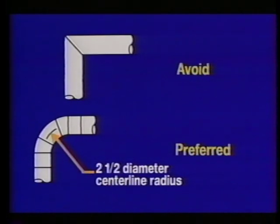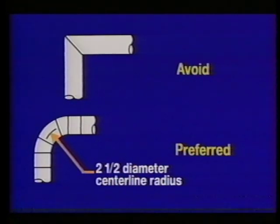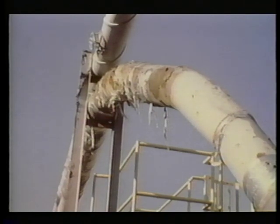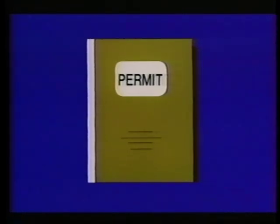Avoid two branches entering directly opposite each other to reduce turbulence loss. Avoid sharp elbows such as a mitered elbow. The magnitude of pressure losses caused by elbows depends on the radius of the elbow curvature compared to the duct diameter. Where space permits, elbows should have a centerline radius of two to two-and-a-half duct diameters. Replace ductwork when it wears out due to erosion and impact damage from airborne particles, and maintain all ductwork in good working order. During design, remember to check with your local air pollution control agency to obtain a permit — the agency can give you guidance for selecting an air cleaner.